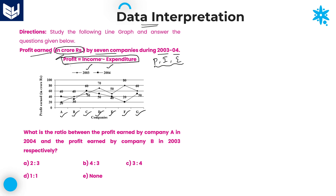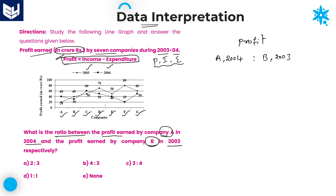Now look at the first question. We need to calculate the ratio between the profit earned by Company A in the year 2004 and the profit earned by Company B in the year 2003. All values in the line graph are profits, so we can directly read them. Company A in 2004 — the square shape — is 40 crores.